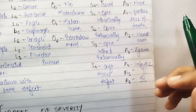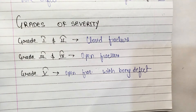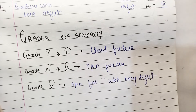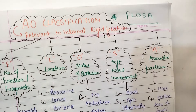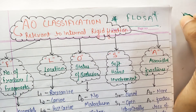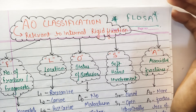Regarding the grade of severity: Grade 1 and Grade 2 indicate a closed fracture. Grade 3 and Grade 4 indicate an open fracture. Grade 5 means open fracture with bone defect. This concludes the AO classification of mandibular fractures — the key distinction to remember is between closed and open fractures.